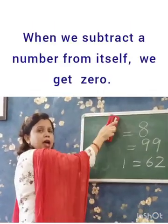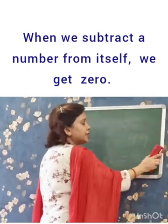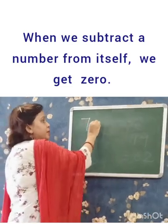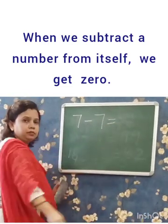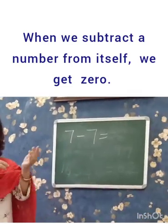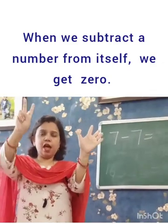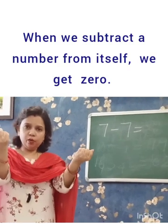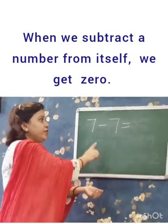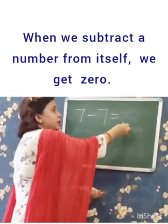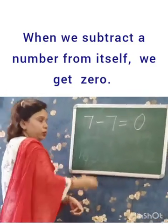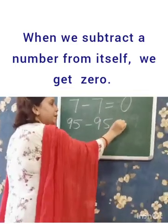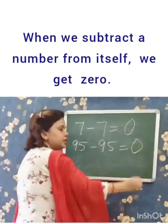When we subtract a number from itself — a number minus the same number — like 7 minus 7: you have 7 ladoos and you eat all 7 ladoos, so what is left? 0. Nothing. So when we subtract a number from the same number, it is 0. 95 minus 95 equals 0.